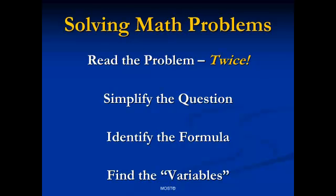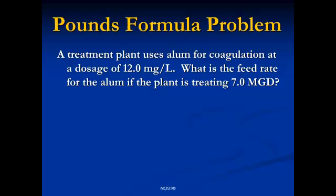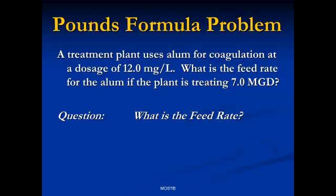Let's look at a quick example: a treatment plant uses alum for coagulation at a dosage of 12 mg per liter. What is the feed rate for the alum if the plant is treating 7 MGD? Read it a second time and then ask the question. The question is: what is the feed rate? How much alum are we going to be feeding in pounds per day?